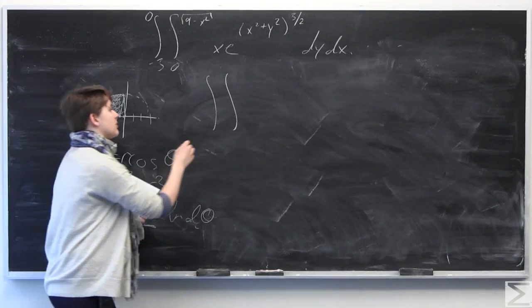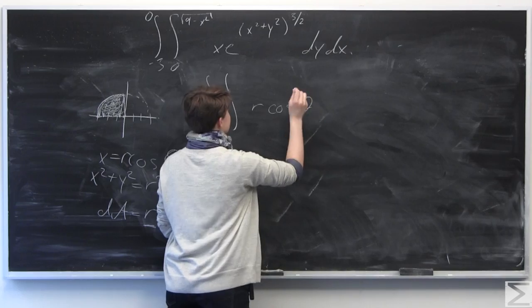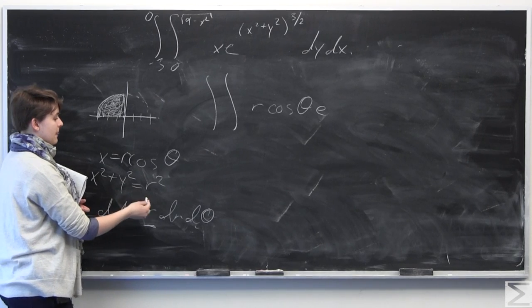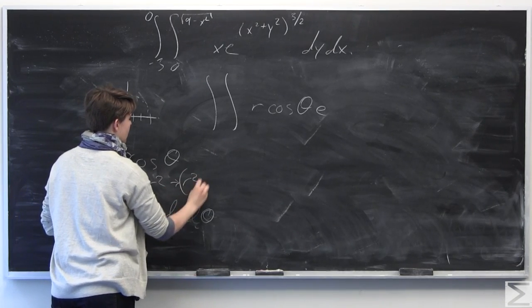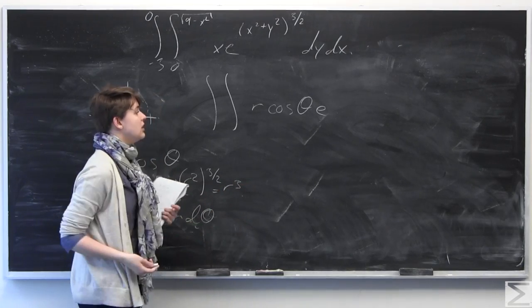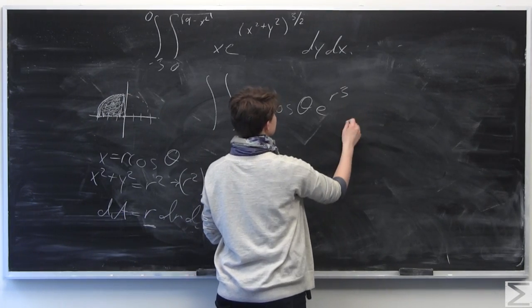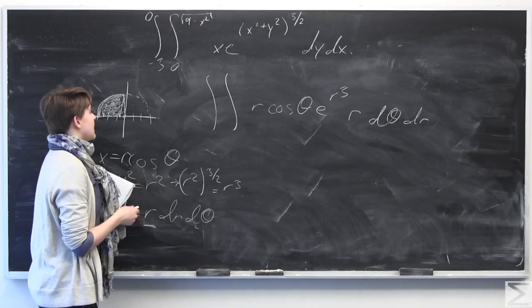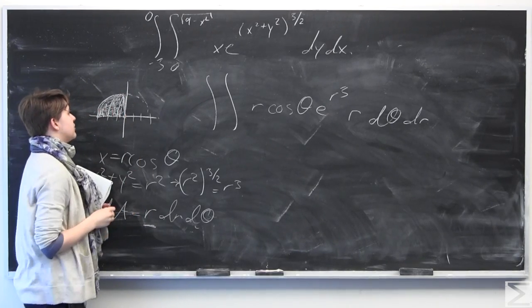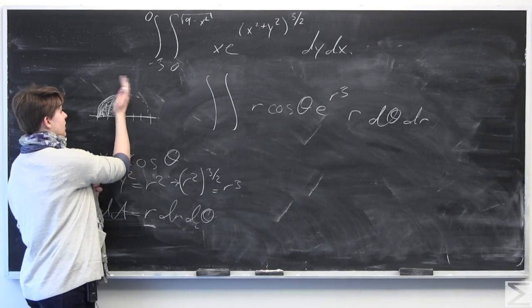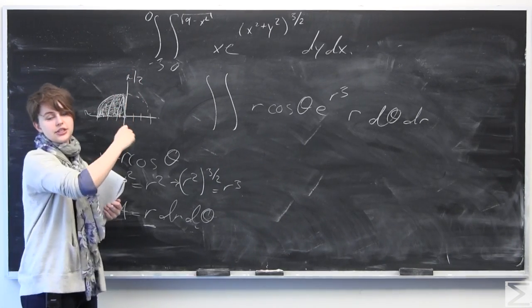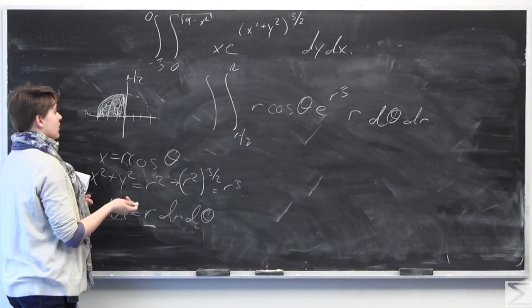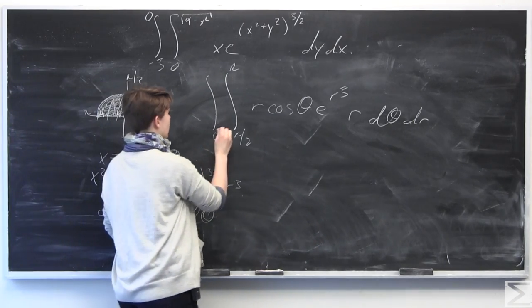We know that x equals r cosine theta, so we plug that in for x. We have e to the quantity x squared plus y squared, which equals r squared, all to the three halves — which is equal to r cubed. So it's just e to the r cubed. Don't forget the extra r, and then we have dr d theta. Our bounds for theta are going to be pi over 2 to pi, and our bounds for r are going to be 0 to 3, since we have radius 3.